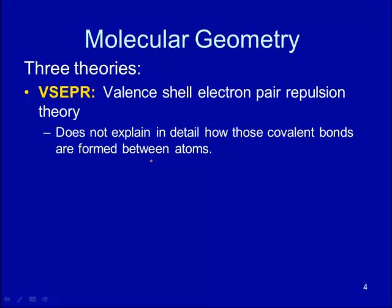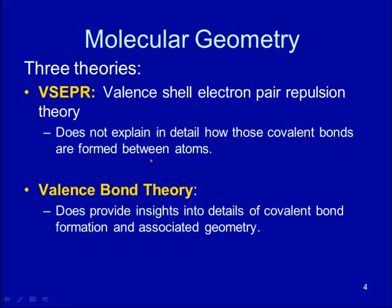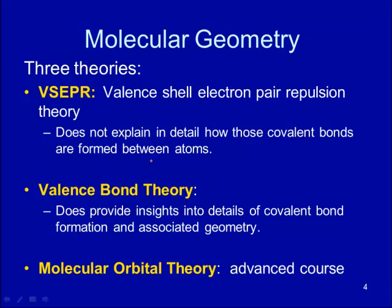The valence bond theory, which we introduce today, provides insights into the details of how covalent bonds are formed, and also explains the associated geometry in two- or three-dimensional space. The last theory is called molecular orbital theory — this is an advanced topic not covered in high school chemistry and will be learned in college. Together, these three theories give a very good picture of covalent compounds, their shapes, and associated reactivity.